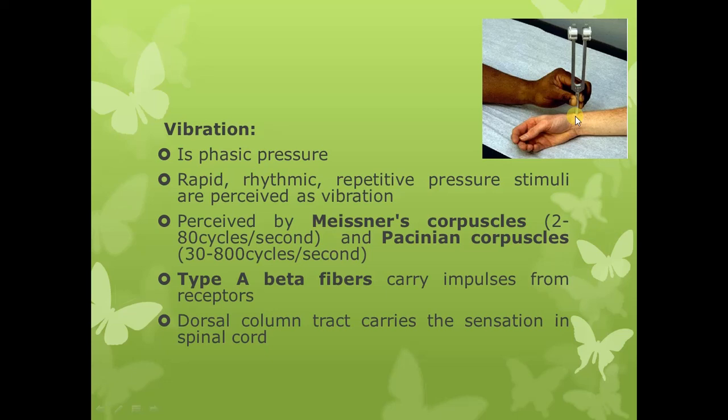In this diagram you can see how the sense of vibration is checked. You place a vibrating tuning fork on a part of your body, usually over the bony prominence, and you feel a buzzing sensation which is your sense of vibration. From the receptors — Meissner's corpuscles and Pacinian corpuscles — these signals are carried by type A beta fibers to the spinal cord, where the signals are carried via the dorsal column.